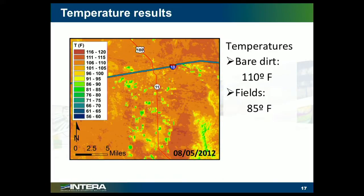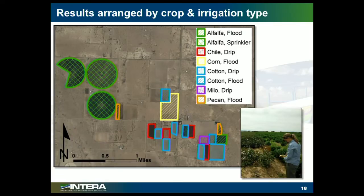If we just look at an ag area using just the temperature band, those green areas are very cool — about 85 degrees Fahrenheit — and they're the irrigated areas. So there's evapotranspiration and consumptive use going on in all those fields, which consumes energy and cools those fields down. The bare dirt is much warmer, so we can use that differential to our advantage. We actually went out, did some field confirmation, and selected fields by both crop and irrigation type and grouped them together to be able to analyze that.